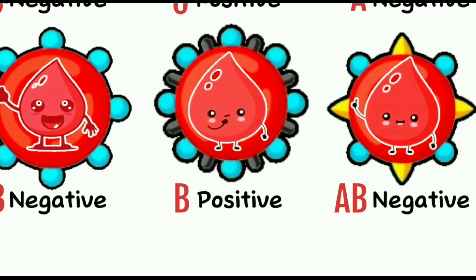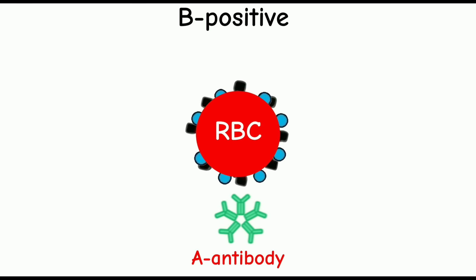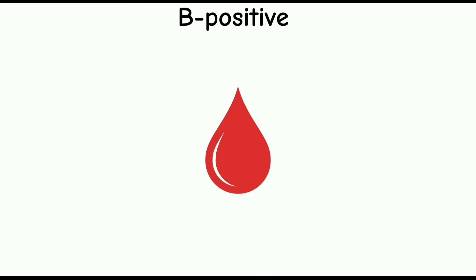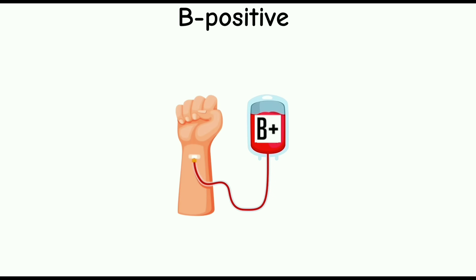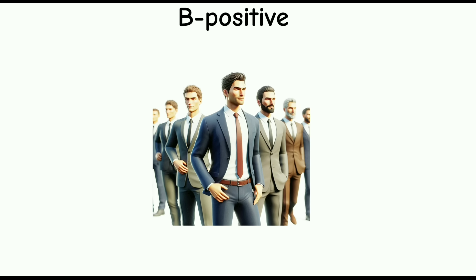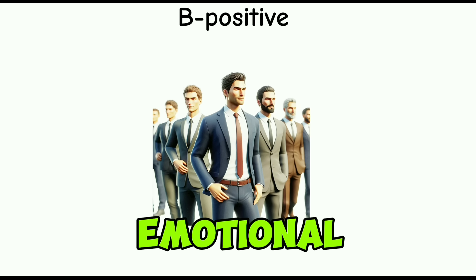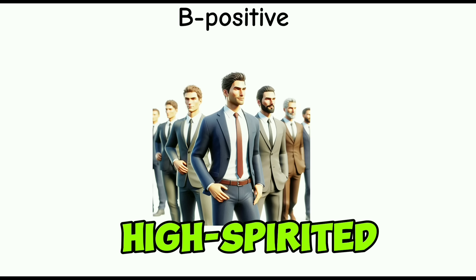B positive. This blood type contains B and Rh antigens and A antibodies. Those with B positive blood can donate to people with B positive and AB positive blood types, and can receive blood from all B and O types. Approximately 8.5% of the U.S. population has this blood type. Psychologically, people with this blood group are often described as emotional, helpful, beautiful, smart, and high-spirited.